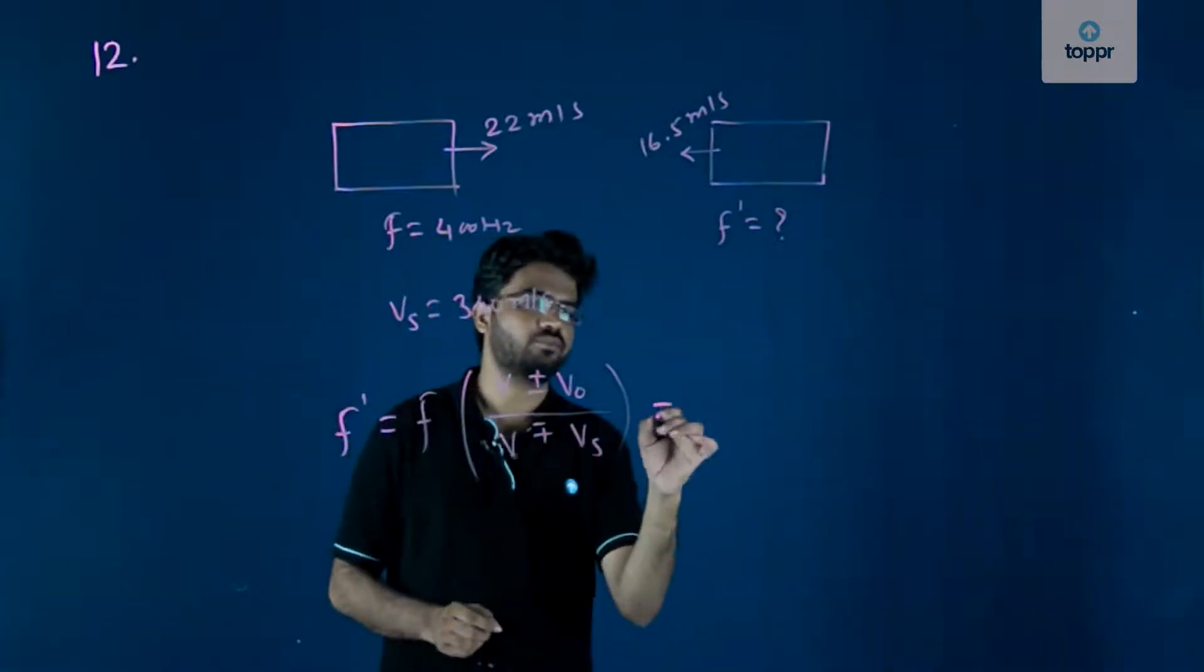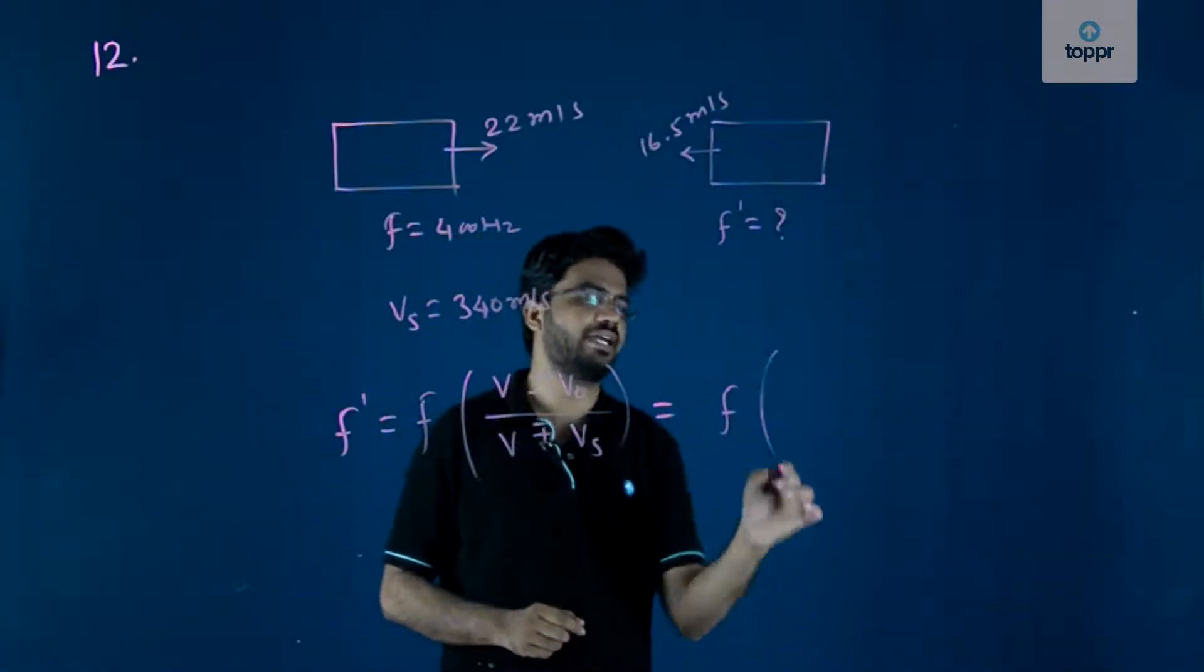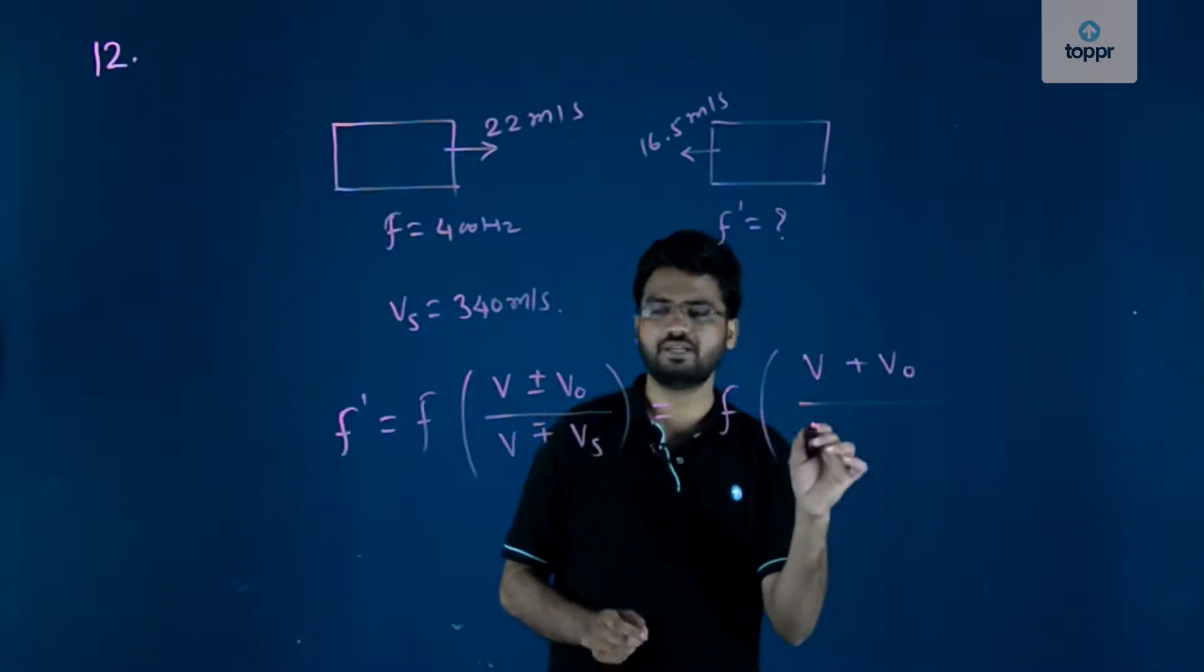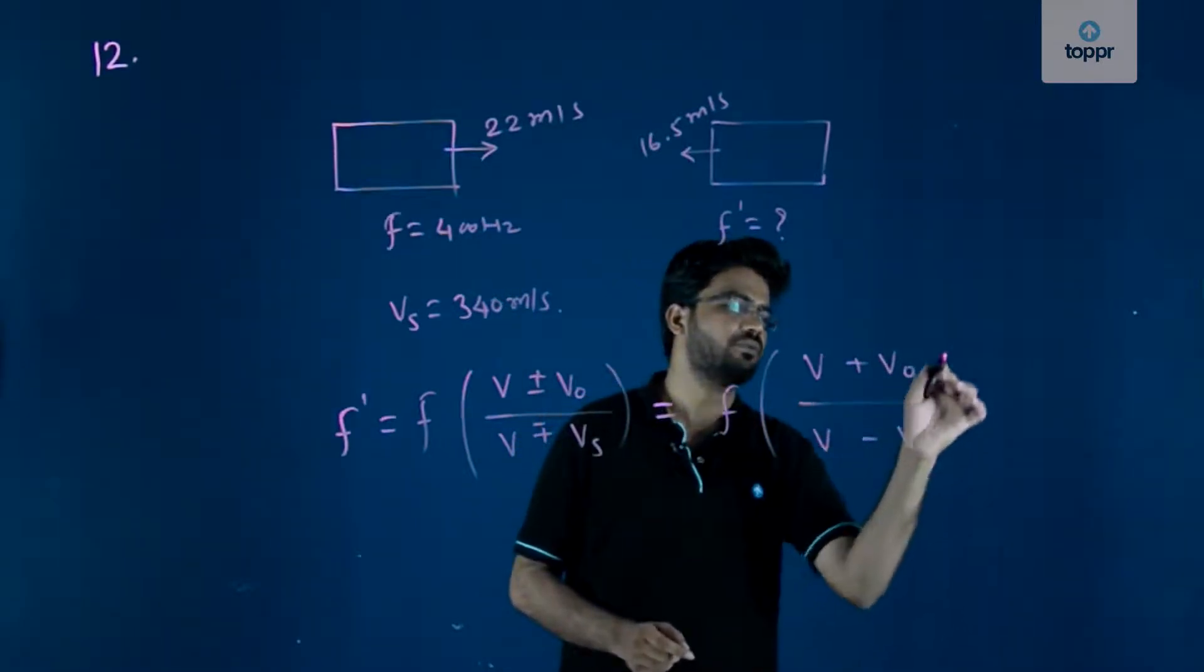So, that is why over here, f in bracket v plus v_o divided by v minus v_s.